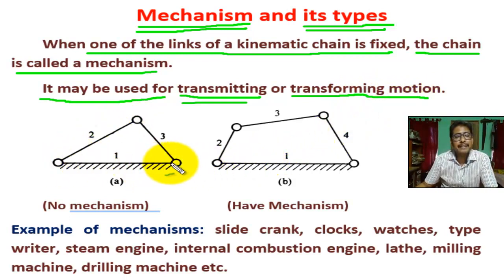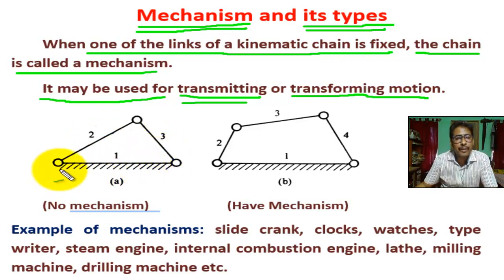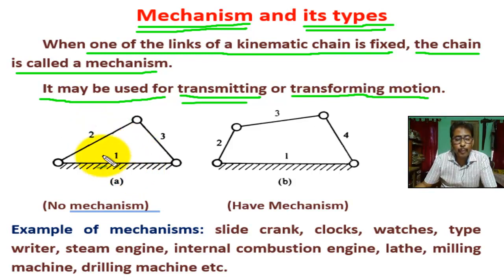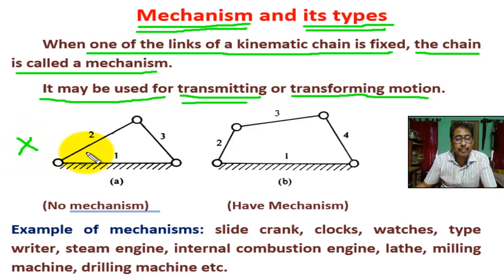This is a three-link chain — one, two, three. If you fix one link, there is no mechanism. An arrangement having three links with pin joints is not able to transmit motion. This form of chain is a structure, not a mechanism.